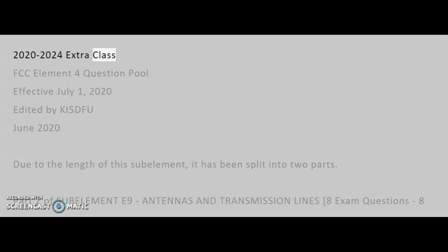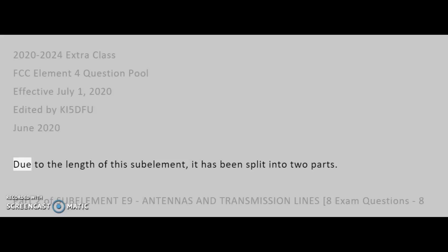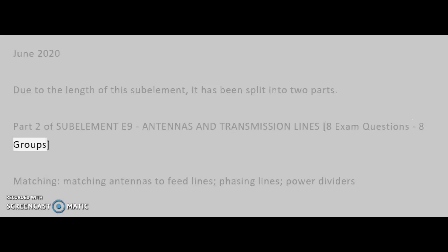2020-2024 Extra Class FCC Element 4 Question Pool, effective July 1, 2020. Edited by KI5DFU, June 2020. Due to the length of this sub-element, it has been split into two parts. Part 2 of sub-element E9: Antennas and Transmission Lines. 8 exam questions, 8 groups.